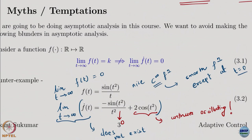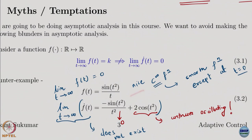Now let us look at the derivative. Using the product or quotient rule, the derivative is −sin(t²)/t² plus 2cos(t²). The first term still goes to 0, but the second term, 2cos(t²), continues to oscillate — it does not have a limit as t goes to infinity. So f-dot of t does not have a limit as t goes to infinity.